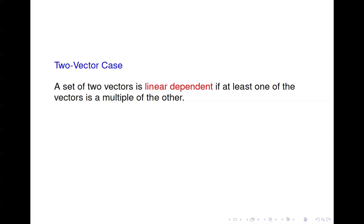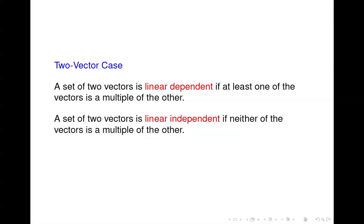We've been looking at the two-vector case, which can at times be misleading. When you have just two vectors, they are linearly dependent if at least one is a multiple of the other. They're linearly independent if neither is a multiple of the other. So that rule works when you only have two vectors.